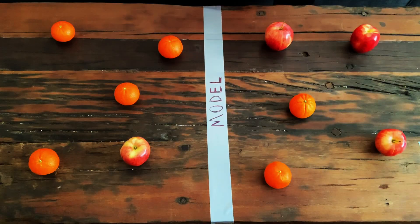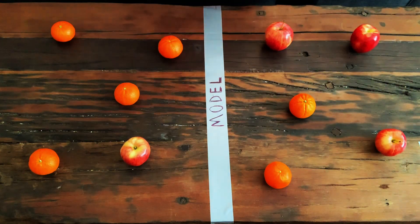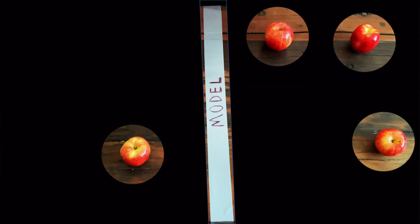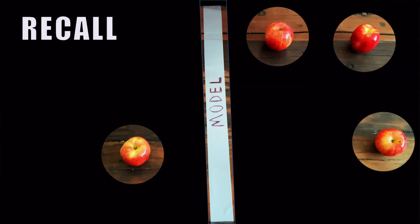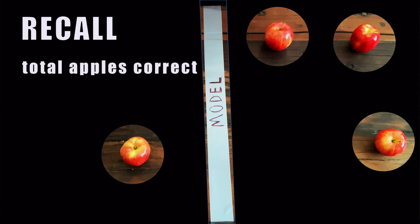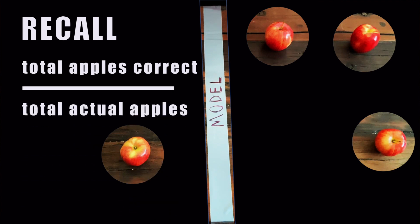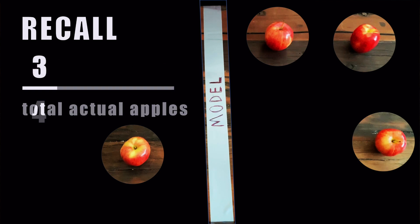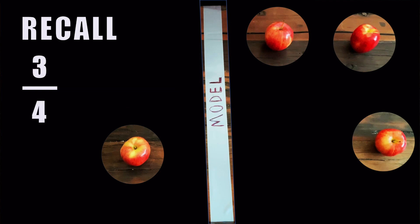To calculate recall, however, we focus in on all of the actual apples — pretend like the oranges don't exist. Recall is determined as the number of apples you got correct out of all of the actual apples. In this case, we got three right out of four actual apples, so our recall is 75%.